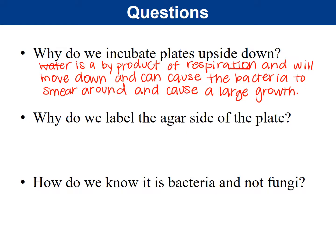Why do we label the agar side of the plate and not the lid? The answer is that if the lid falls off — say you're carrying five plates and you drop them and the lid and plate separate — if you labeled the lid, you'd have no idea what was growing on that plate. If you labeled the agar side, you'd still know what was growing. We label along the edge of the plate so you can still see the colonies.